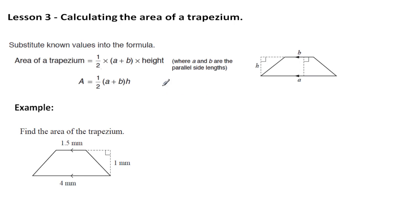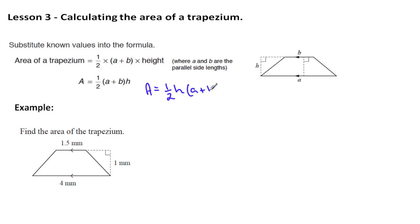In simple form, we get half of (a plus b) times the height. I've also seen the formula written as: area equals half times the height, then in brackets times (a plus b). So all of these formulas are exactly the same.